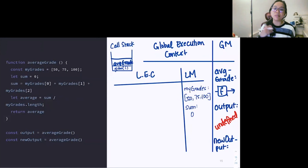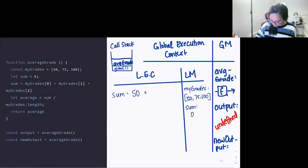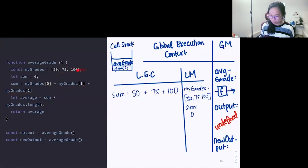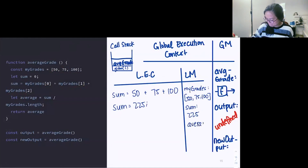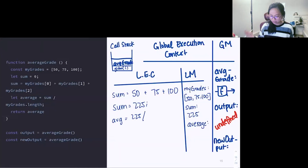Sum is going to be reassigned based on what we have: sum will now be 50 plus 75 plus 100, because it's asking for myGrades at zeroth index (50), myGrades at first index (75), and myGrades at second index (100). So sum is 225. Then in our local memory we'll have variable average, and our average is set to sum (225) divided by myGrades.length (3), so average is 75.